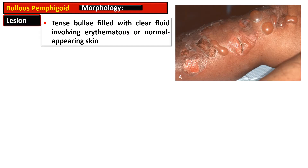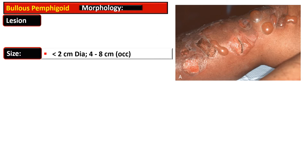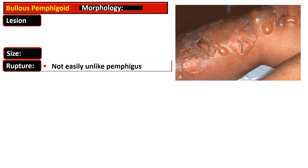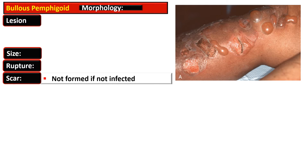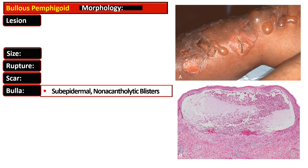The lesions of bullous pemphigoid are blisters that are tense and filled with clear fluid. The base of the skin appears erythematous or normal. Size is usually less than two centimeters in diameter but can occasionally reach four to eight centimeters. These bullae do not rupture easily, and if not infected, a scar is not usually formed.